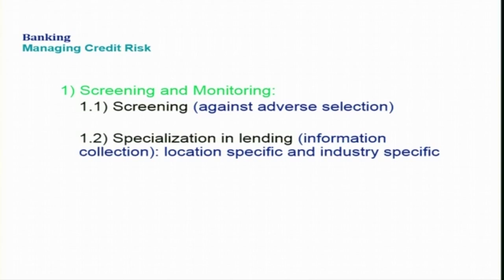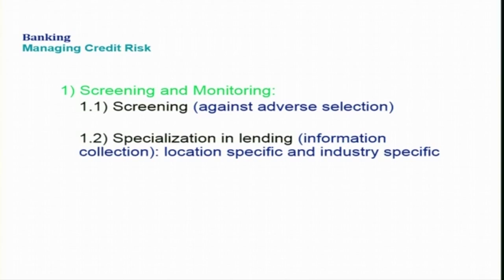To reduce this moral hazard, financial institutions must write restrictive covenants into loan contracts that restrict borrowers from engaging in risky activities. By monitoring borrowers' activities to see whether they are complying with restrictive covenants, and by enforcing covenants if they are not, lenders can ensure borrowers are not taking on risk at their expense. The need for banks to engage in screening and monitoring explains why they spend so much money on auditing and information-collecting activities.